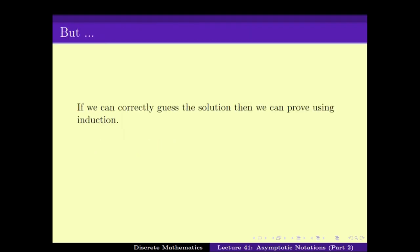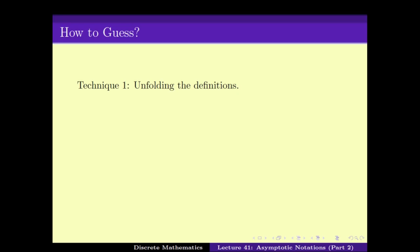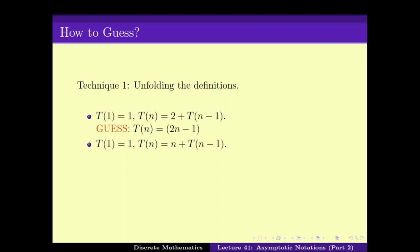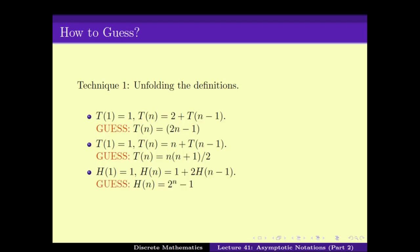The idea is that if we can correctly guess the solution, then proving by induction is a reasonably straightforward thing. But how do we get the solution correctly? One technique to solve or guess the recurrence relation is by unfolding the definition. For example, we looked at a recurrence relation and saw that t(n) equals 2n minus 1. Similarly, we have seen how other recurrence relations are solved.